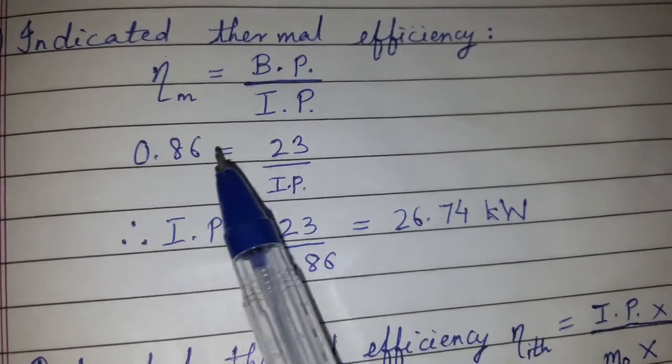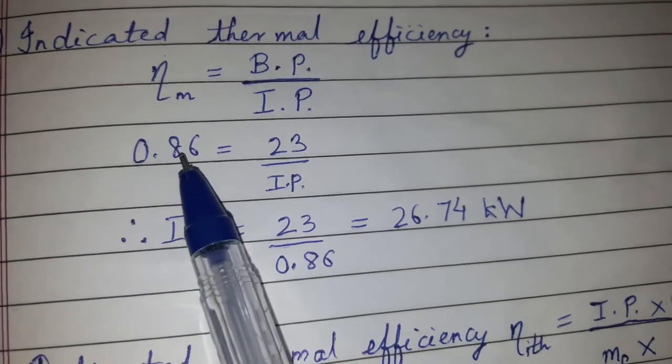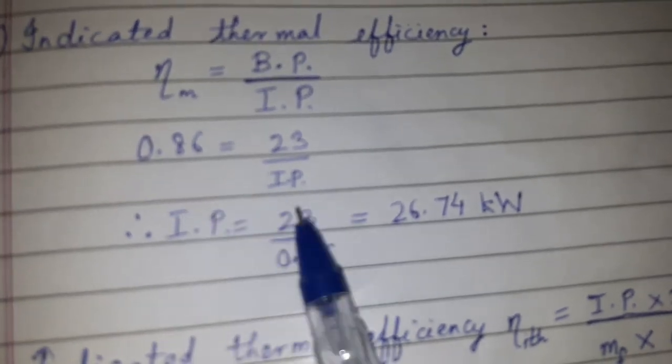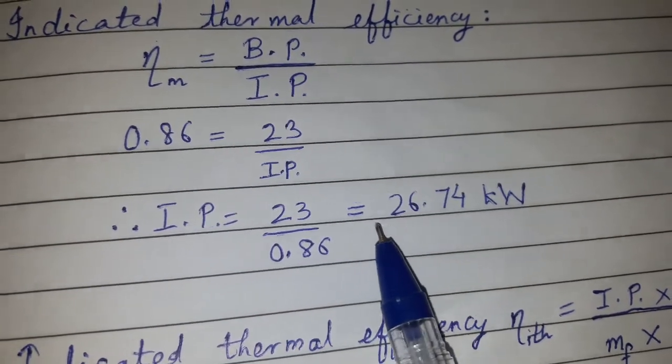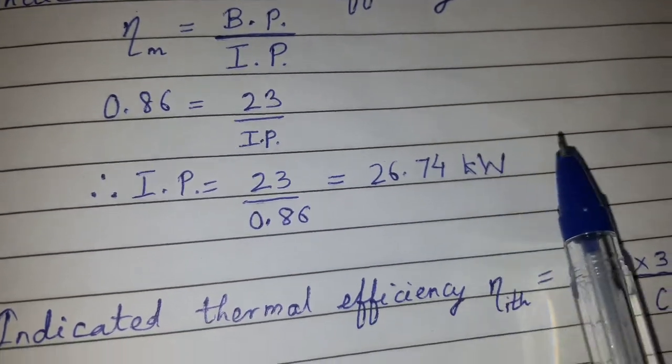From this, we can rearrange to find IP: IP = 23 / 0.86 = 26.74 kW.